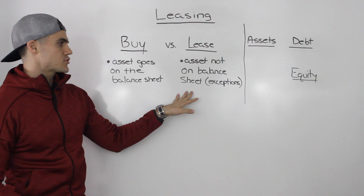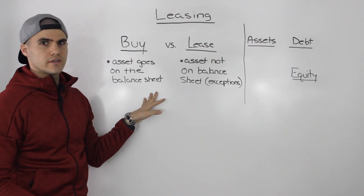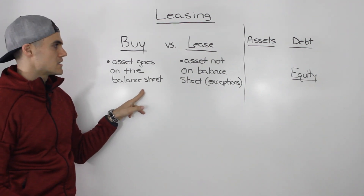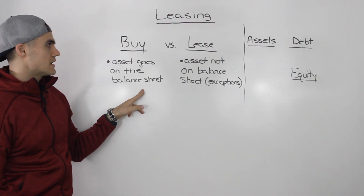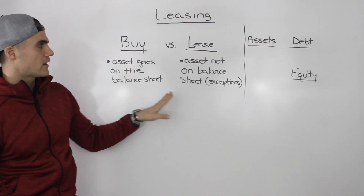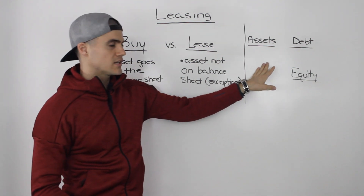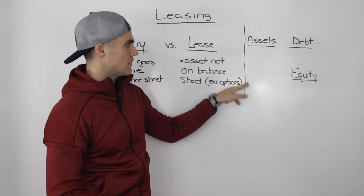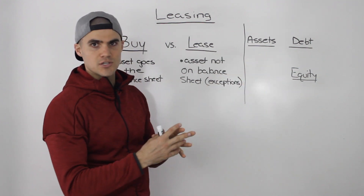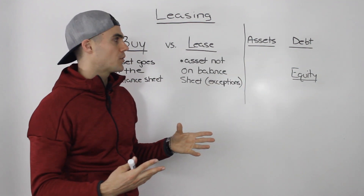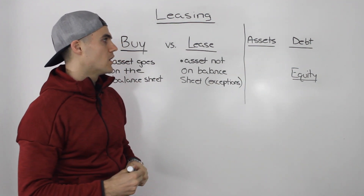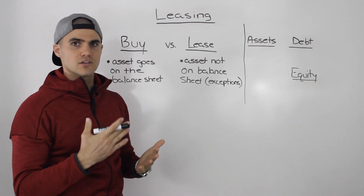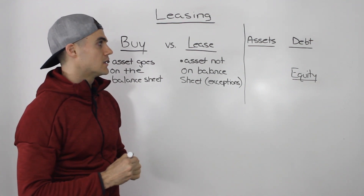For now let's just assume that if you're leasing an asset it doesn't go on your balance sheet. I drew a balance sheet here — assets are on the left side and debt, liabilities, and equity are on the right side. Looking at these options intuitively, you would think you want to buy assets because the asset ends up going on your balance sheet, and filling up that asset side means your company is growing, right? Well, again it's very case dependent — there's a lot that goes into that question.